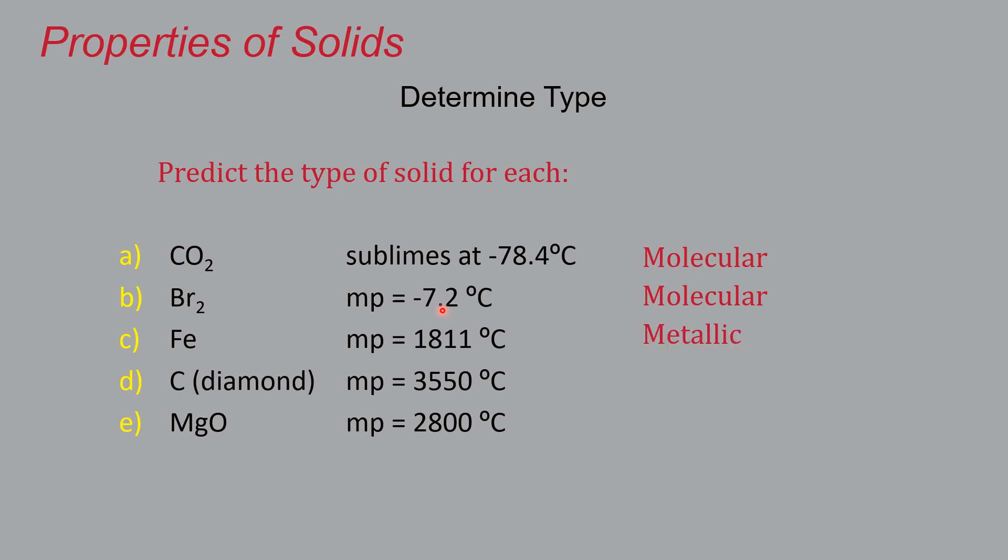Iron, pretty straightforward. Namely that it's a metallic element, so that's a dead giveaway. And the fact that it's got a reasonably high melting point as well at about 1800 degrees Celsius also indicates that, yeah, this is probably a metallic solid.